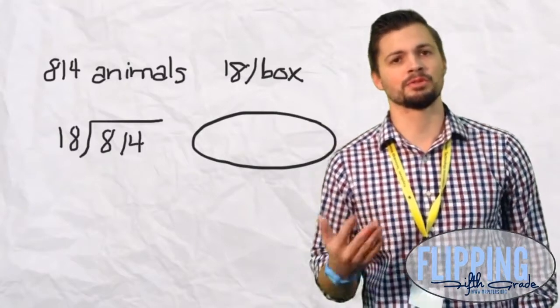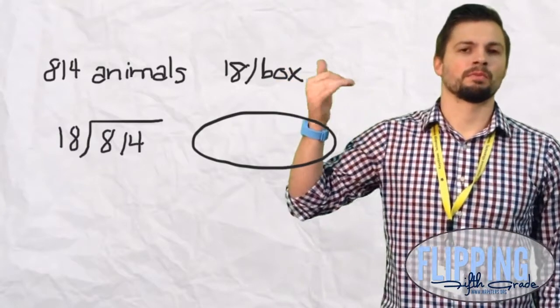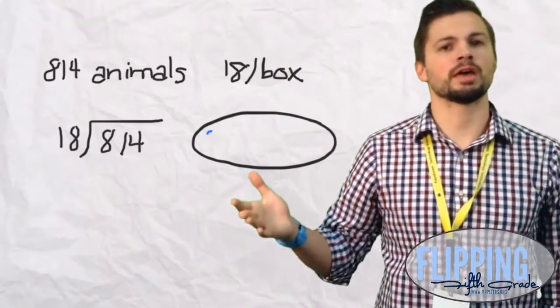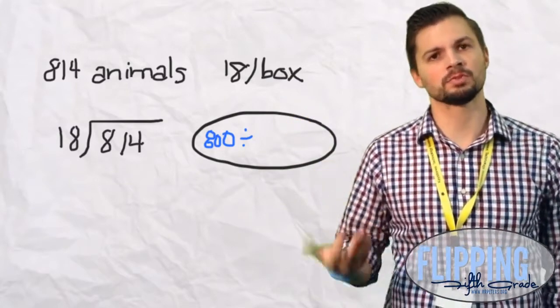We know that 18 doesn't go into 8 but we do know that it goes into 81. So we're going to set up the problem, we're going to make them into compatible numbers. To do that we round the 814 down to 800 and the 18 up to 20.